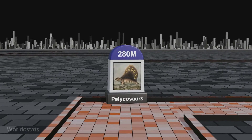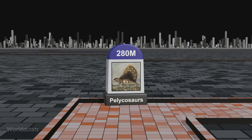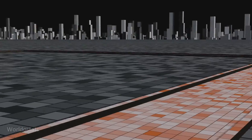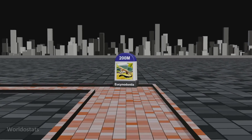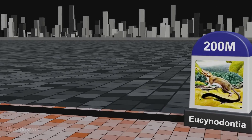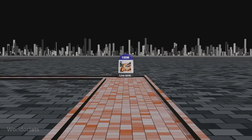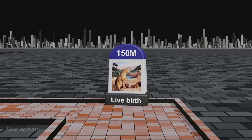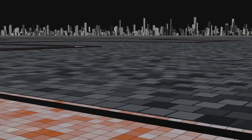Shortly after the appearance of the first reptiles, two branches split off. One branch is the Sauropsida, from which come modern reptiles and birds. The other branch is Synapsida, from which come modern mammals. The earliest mammal-like reptiles are the pelycosaurs. The first mammals evolved from Eucynodontia 200 million years ago, a group of synapsids. The evolution of live birth, or viviparity, occurred approximately 150 million years ago, representing a reproductive adaptation where offspring develop within the mother's body before birth.